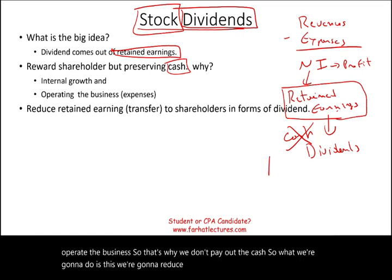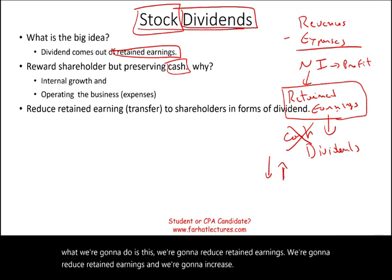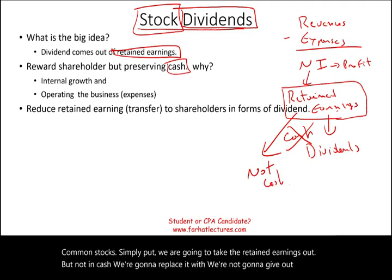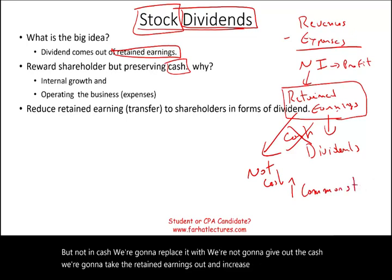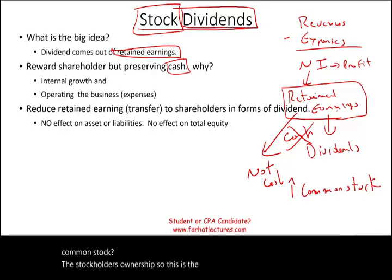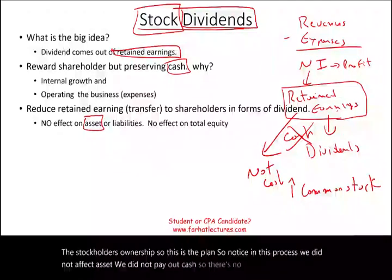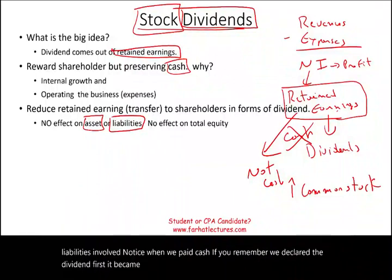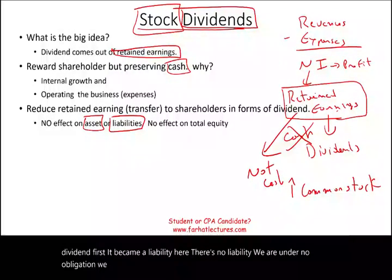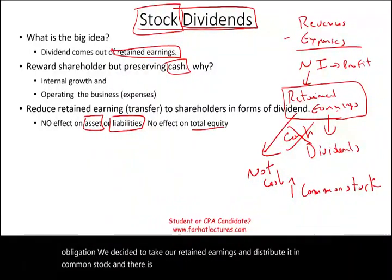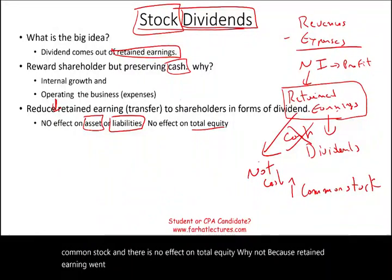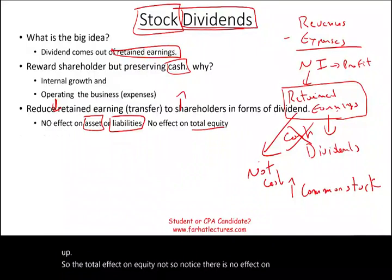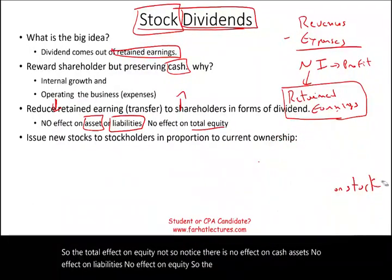What we're going to do is reduce retained earnings and increase common stock. We are going to take the retained earnings out, but not in cash — we're going to increase common stock instead. Common stock represents stockholder ownership. Notice in this process, we did not affect assets. We did not pay out cash, so there's no cash involved and no liabilities involved. There's no liability — we are under no obligation. We decided to take our retained earnings and distribute it in common stock. And there's no effect on total equity, because retained earnings went down and common stock went up.